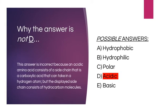Option D: Acidic. An amino acid is a molecular building block of proteins with a central carbon atom called the alpha carbon, bonded to two functional groups — an ammonium group and a carboxylate group. The alpha carbon is also bonded to a hydrogen atom and an R group or side chain. This answer is incorrect because an acidic amino acid consists of a side chain that is a carboxylic acid that can take in a hydrogen atom, but the displayed side chain consists of hydrocarbon molecules.